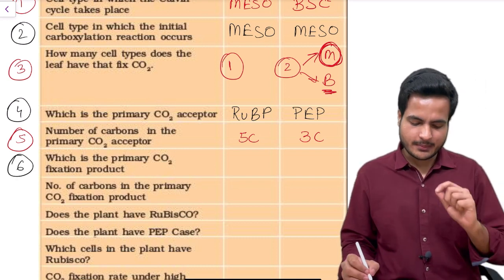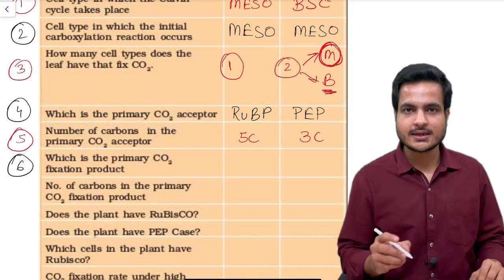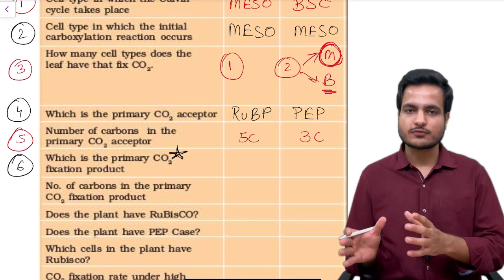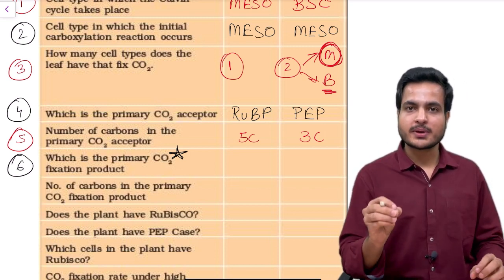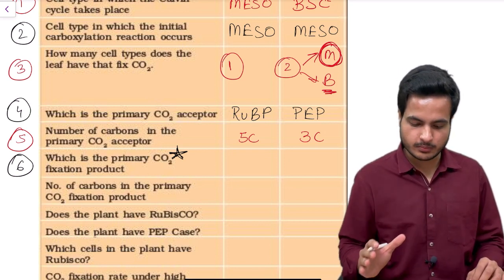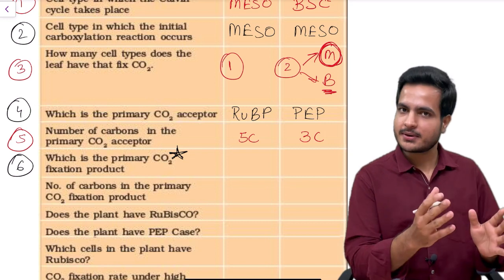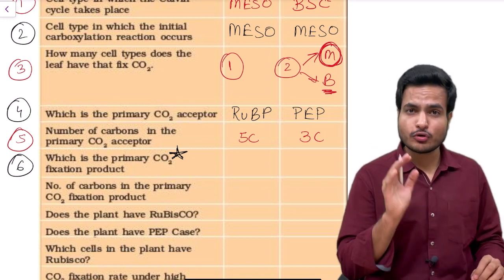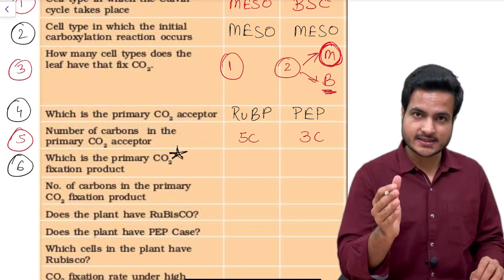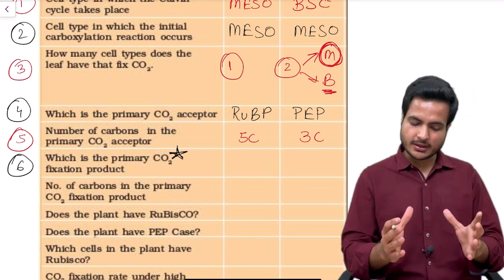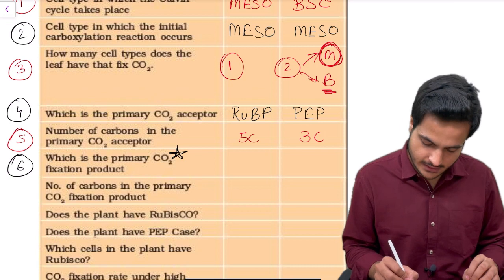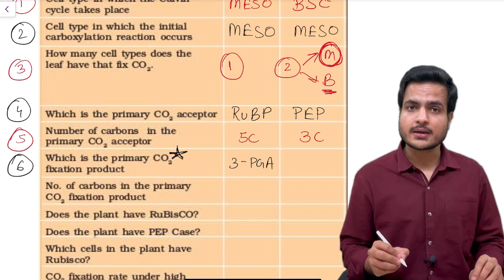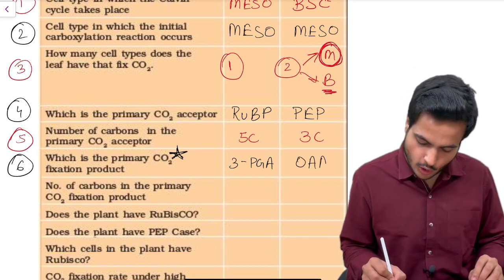The sixth question asks which is the primary carbon dioxide fixation product. This is the main reason we have two types of plants — C3 and C4 — named on the basis of their primary CO2 fixation product. In C3 plants it is a three-carbon compound called phosphoglyceric acid (3-PGA). In C4 plants it is a four-carbon acid called oxaloacetic acid (OAA). The seventh question is the number of carbons in this product: three for C3 plants and four for C4 plants.